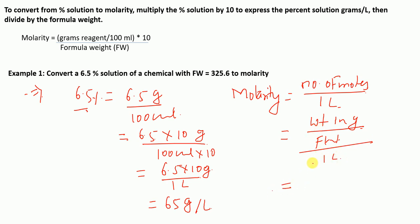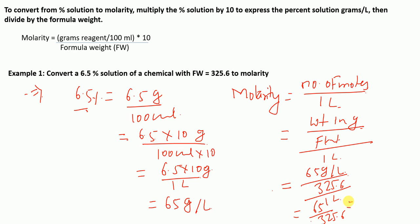Weight in grams is 65 grams per liter and the formula weight is 325.6. So we divide 65 by 325.6, which gives us 0.1996 molar.